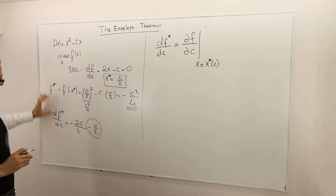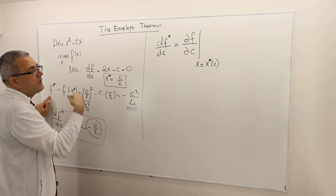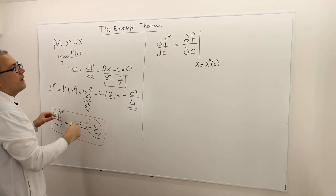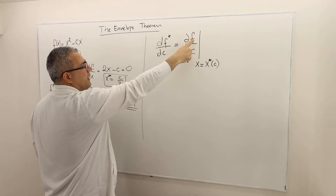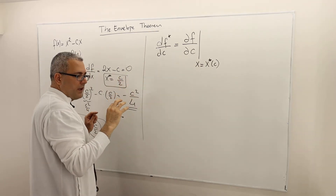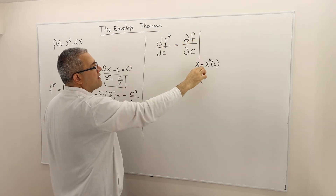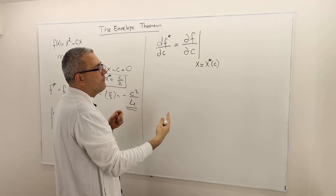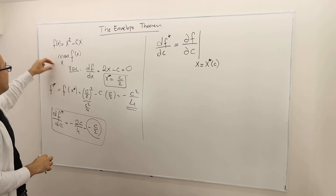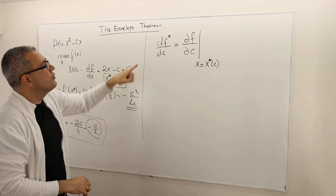The idea is: df star over dc, since f star is just a function of c, tells you how c changes the value of f star. But f star was calculated from f itself when we plugged in the optimal x star. So when you calculate the partial derivative of f with respect to c, evaluated at x equals x star, you should get exactly the same thing. Let's verify whether this is really true.